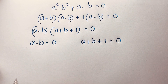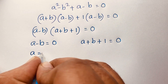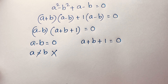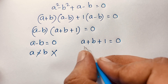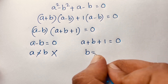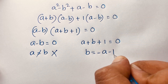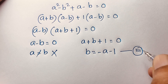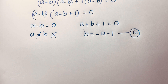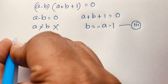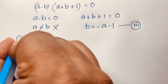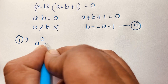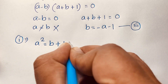From a minus b equals 0 we get a equals b, but this case is rejected since a is not equal to b. In the other expression, b equals minus a minus 1. This is our third equation. Our target now is to find a, so we recall our first equation: a squared equals b plus 183.